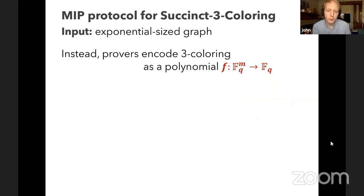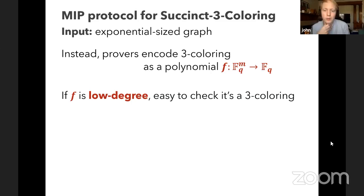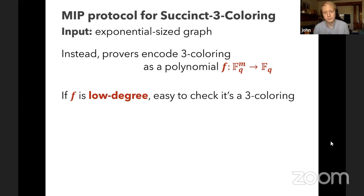The idea with this encoding is that if your function F is a proper encoding of a three coloring of your graph, what you get is not just a polynomial F but a low-degree polynomial F which properly encodes a three coloring. It also turns out that for any low-degree polynomial, it's easy to check whether it corresponds to a proper three coloring or an improper one that violates at least one edge.